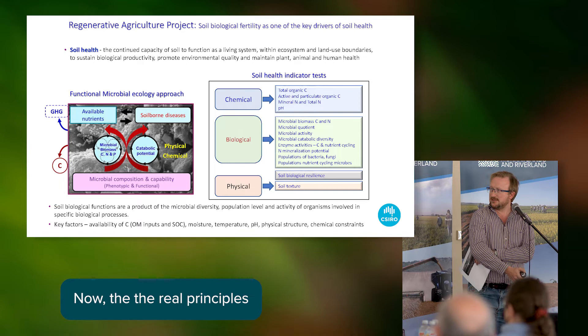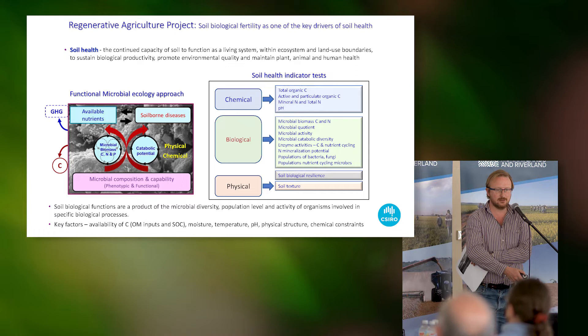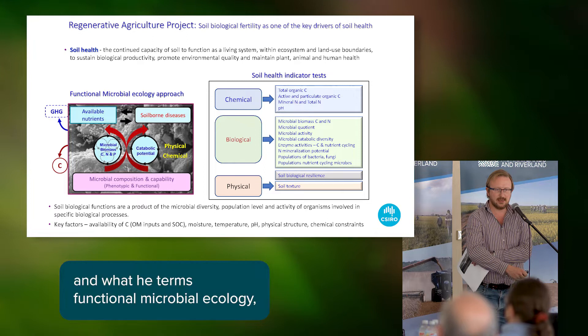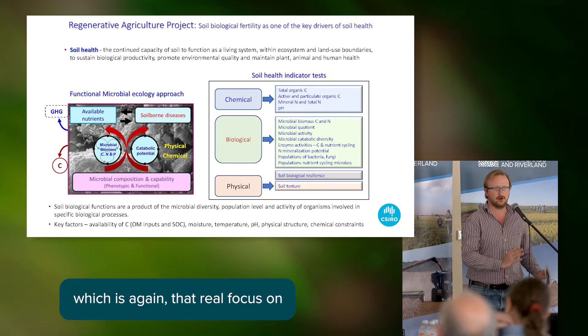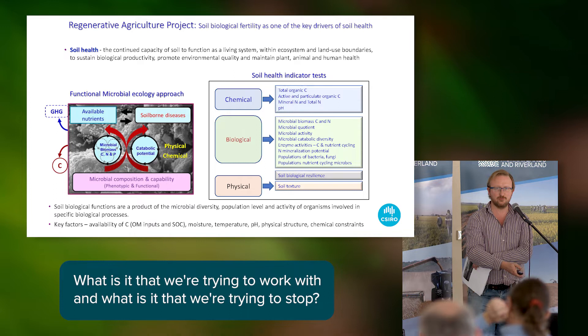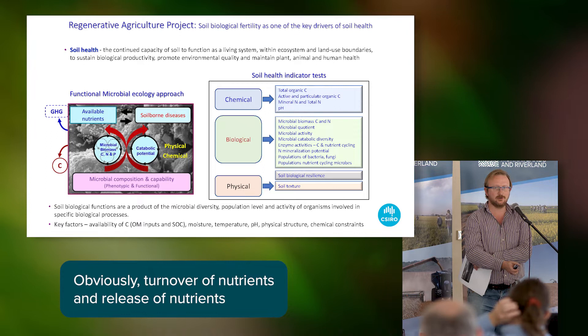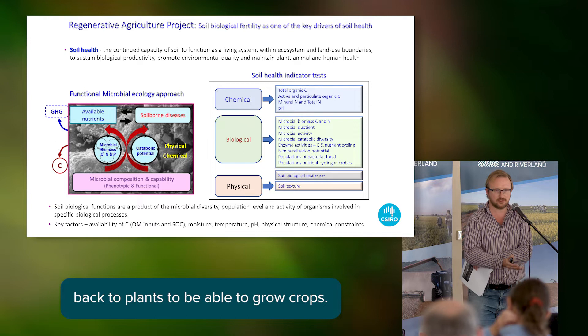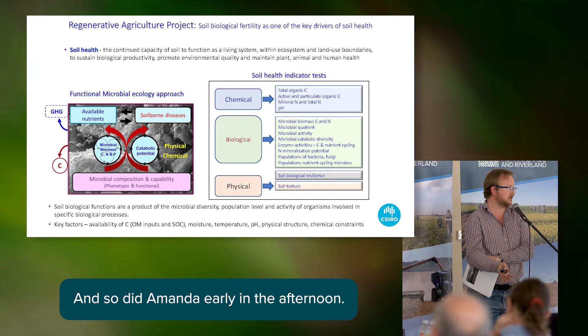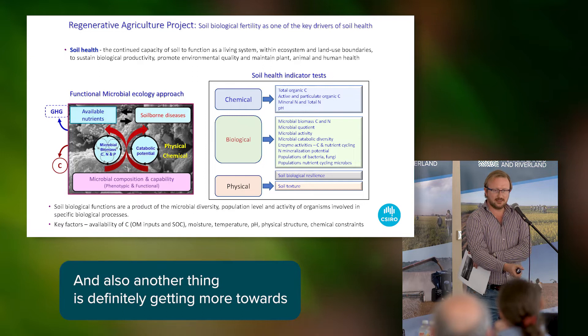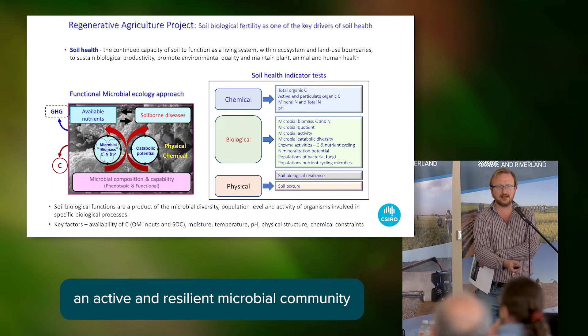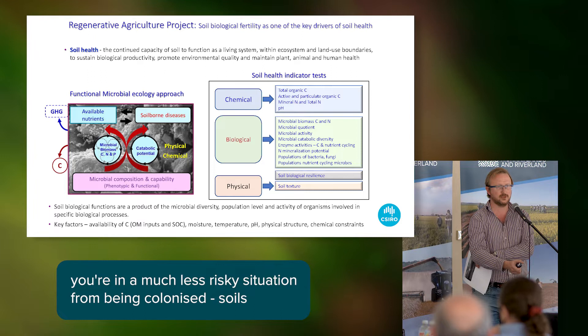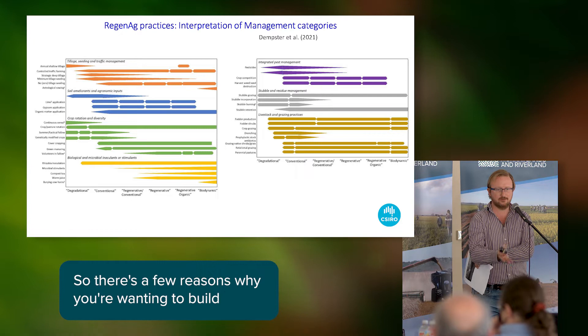The real principles Gupta has put behind this is looking at how those processes contribute to soil health and soil function - what he terms functional microbial ecology - that real focus on what processes we actually need to get out of this system. Processes we're trying to work with include turnover and release of nutrients back to plants to grow crops, building carbon, and disease management. If you have an active and resilient microbial community you're in a much less risky situation from being colonized by pathogens. There are several reasons why you'd want to build microbial resilience in your system.